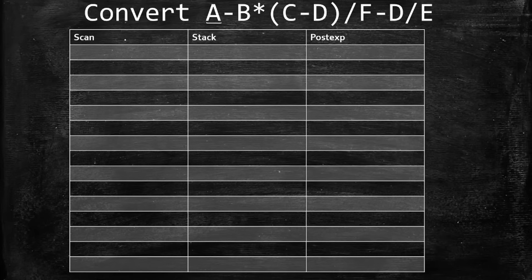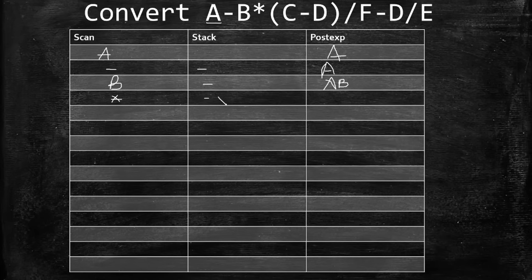Working through the example: scan A — it is an operand, push to PostExp. Scan minus — it is an operator, push to Stack. Scan B — operand, PostExp becomes A B. Scan multiply (*) — operator; compare with minus in stack: * has higher priority, so push * to Stack. Stack now has minus and *; PostExp remains A B.